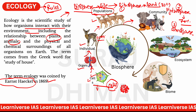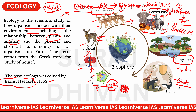Population के बाद community आती है — जंगल में deer, elephant, lions, zebra, birds, rhinos सब मिलकर एक community बनाते हैं। यह पूरी community जिस area में रहती है और जहाँ आप interaction practically देख सकते हैं, उसको ecosystem कहते हैं। Ecosystem के बाद जब हम climate को include करते हैं — temperature patterns, rainfall patterns की variation — तो unique conditions बनती हैं जिसको biome कहते हैं।